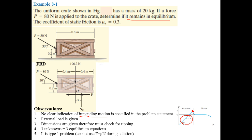We assume this crate, under the action of the applied force, will remain in the no-motion zone. The friction force developed at the point of contact will be less than the maximum value of friction force. We know that the maximum value of friction force is μ times N — that is the friction force at the point of impending motion.